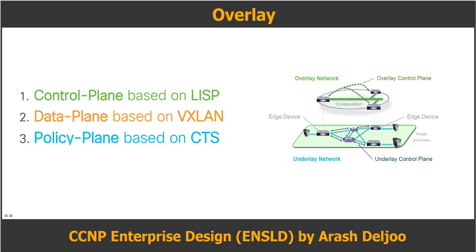The fabric control plane provides logical mapping and resolution of endpoint IDs of users and devices using Locator ID Separation Protocol, or LISP. The fabric data plane provides a logical overlay created by Virtual Extensible LAN, or VXLAN, packet encapsulation along with the Group Policy Option, or GPO. The fabric policy plane applies network security policy through Scalable Group Tags, or SGTs, and group-based policies.